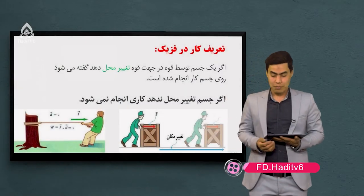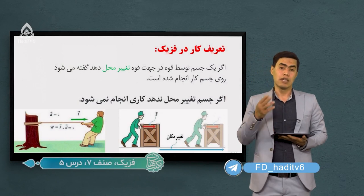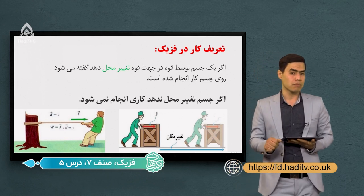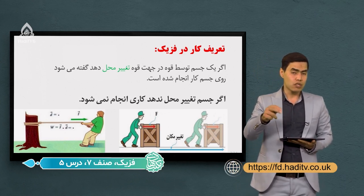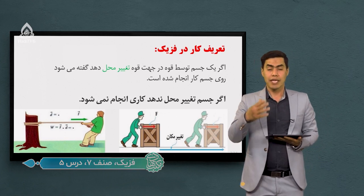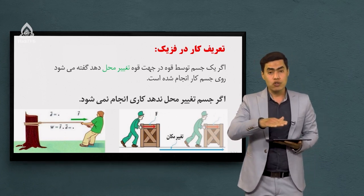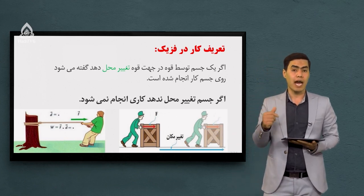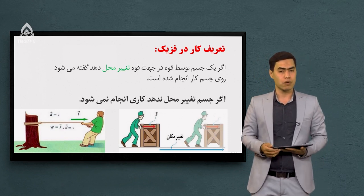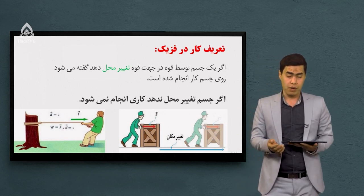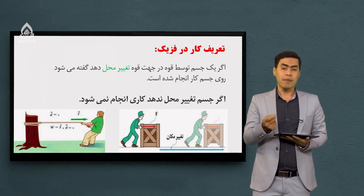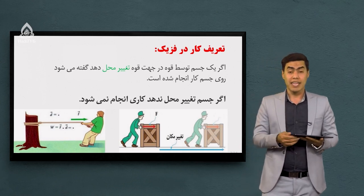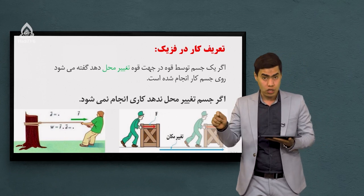در جلسه قبل در رابطه با قوه و تأثیرات قوه صحبت کردیم. قوه تعریفش تأثیر دو جسم بر یکدیگر بود. یکی از تأثیراتی که قوه داشت این بود که باعث می‌شد جسم به حرکت در بیاید و تغییر مکان بدهد. طبق همین تعریف، کار در فیزیک تعریف می‌کنیم: کار در فیزیک به چی معنا و مفهومه؟